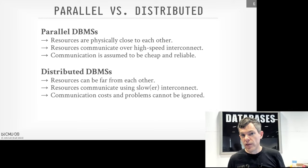There are basically two approaches to organize workers in a database system: process per database worker and thread per worker. There's also a third category called embedded systems. I would say the most common approach used today, if you're building a new system, is going to be the thread per database worker, because in the modern era, writing threads is not as onerous as it used to be in the 80s and 90s. We'll talk about process per workers and see why people avoided threads back then and why they switched to threads later on.